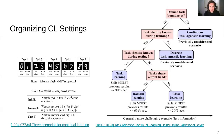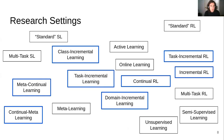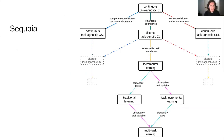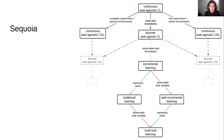Previous work has also tried to organize the field of continual learning based on assumptions about task boundaries, task identity, and whether the context is stationary or not. In this work, we attempt to go one step further and also bridge the divide between reinforcement and supervised continual learning. We create this tree of continual learning settings based on different assumptions typically used in continual learning research: whether the environment is supervised or reinforcement learning, whether there are clear task boundaries, whether such boundaries are observable, whether task identity is known during training or testing, and lastly, if the context is stationary — meaning does the environment change over time or not.